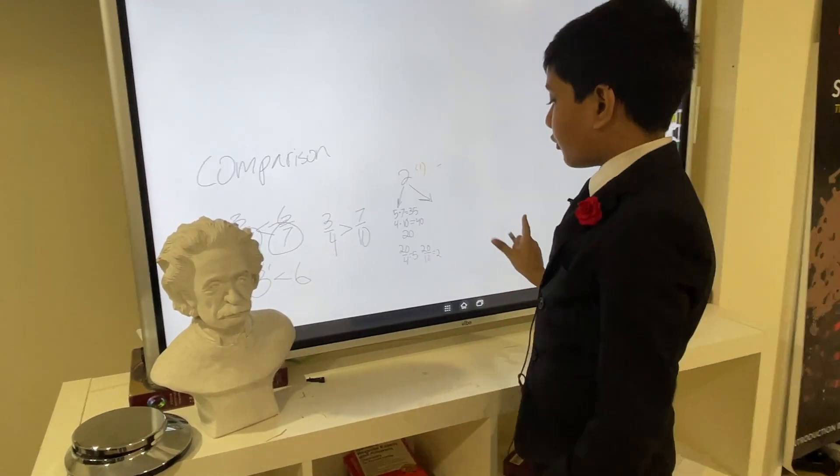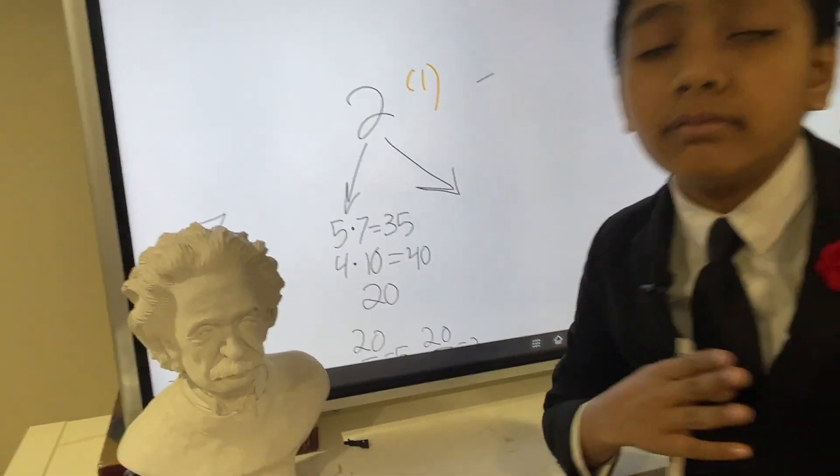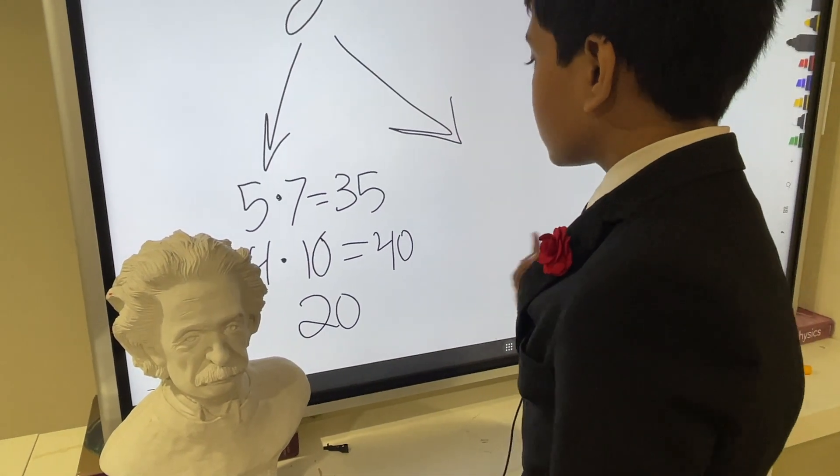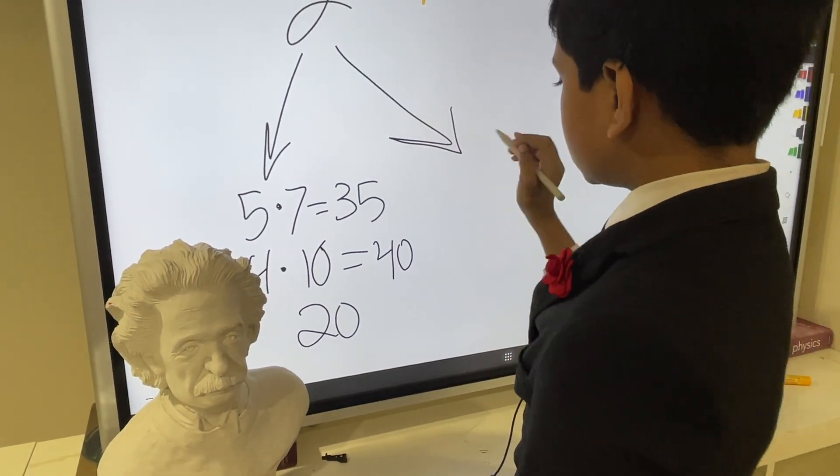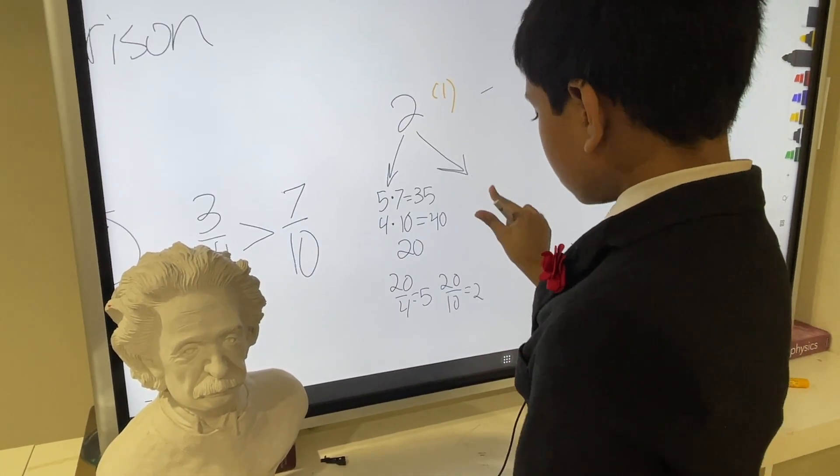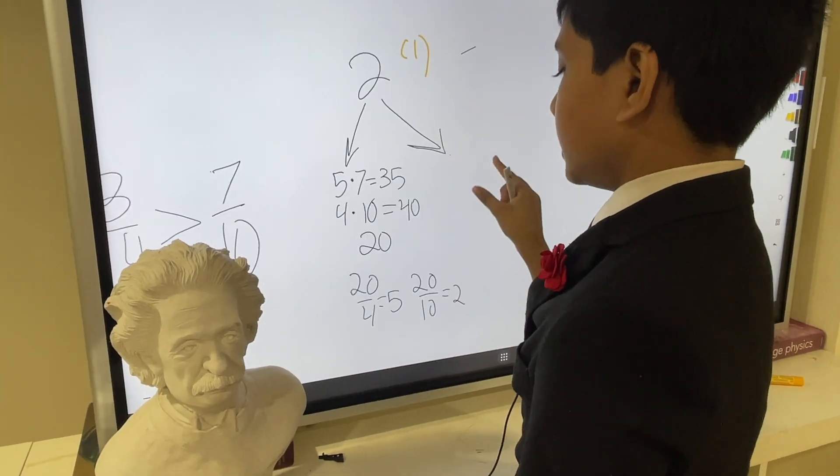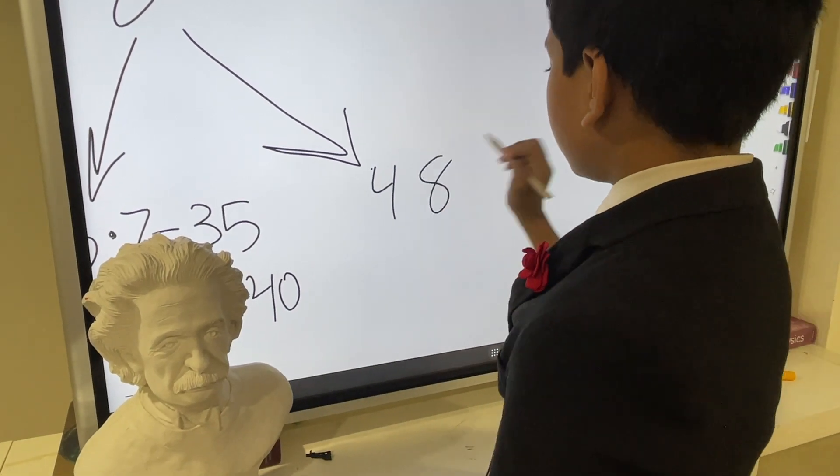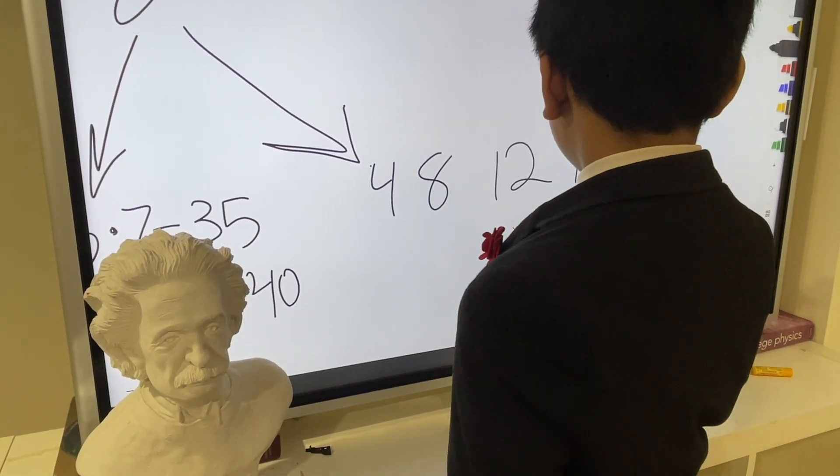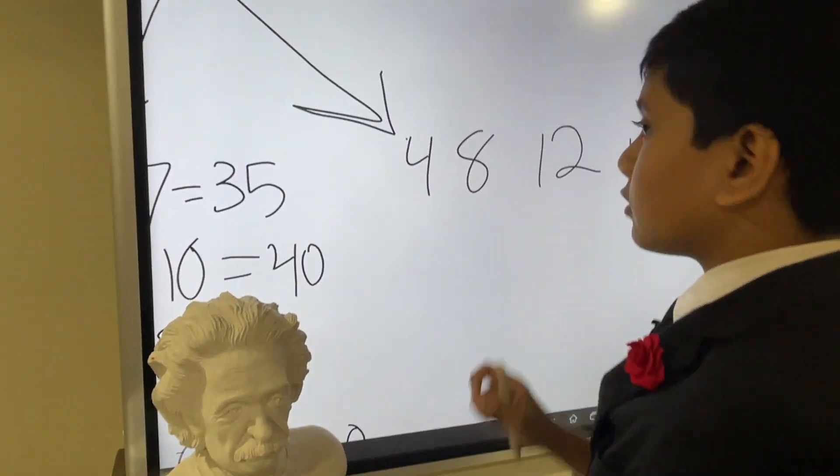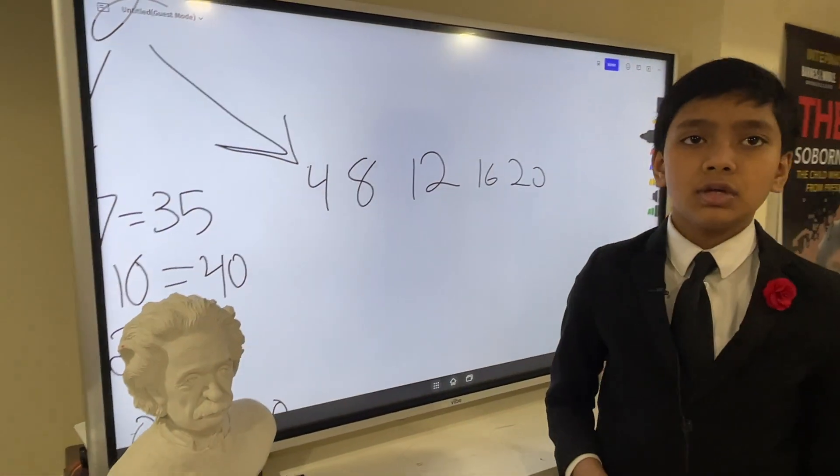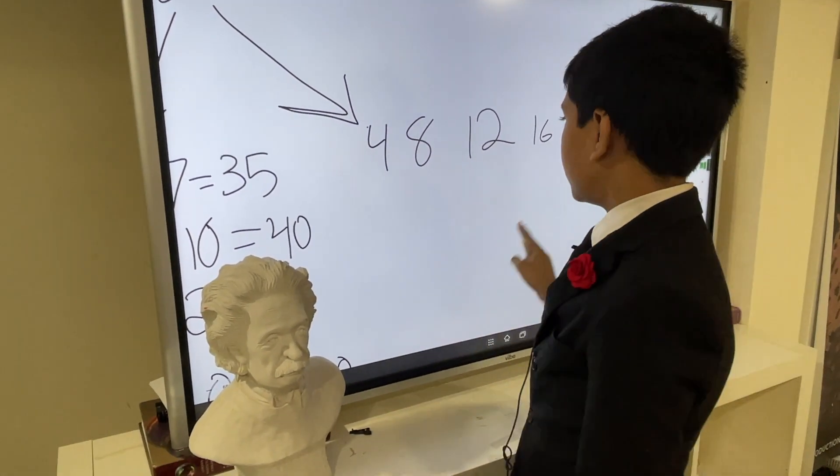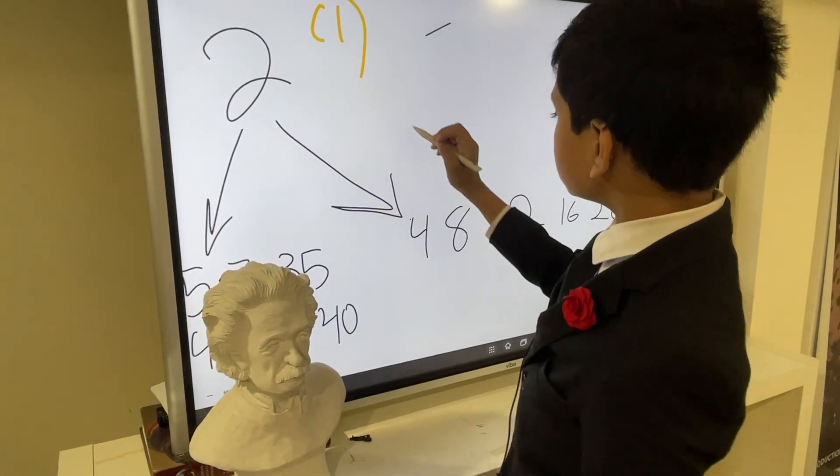Another way that prevents this problem but can be mind-numbingly tedious is just writing out all their multiples. Here we can do, for example, 4, 8, 12, 16, 20, and we want to find our least common multiple.